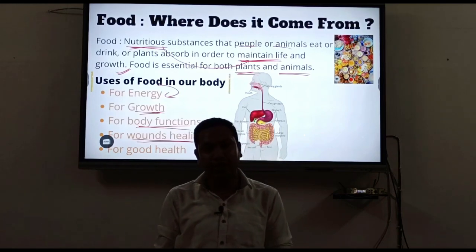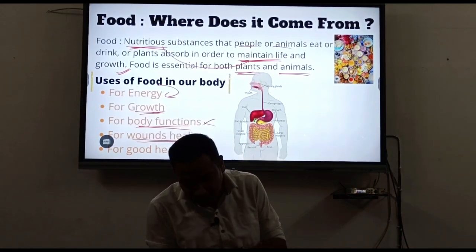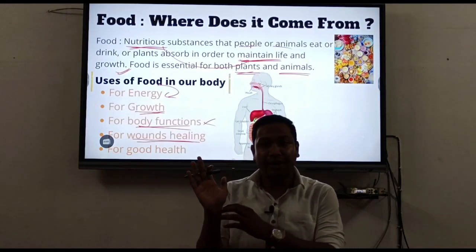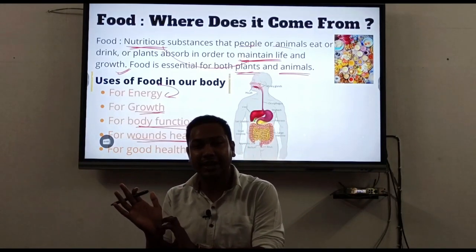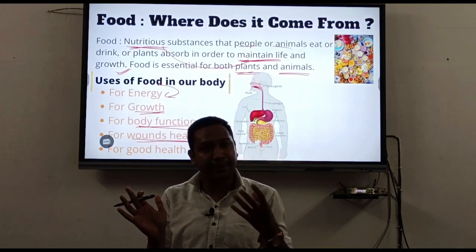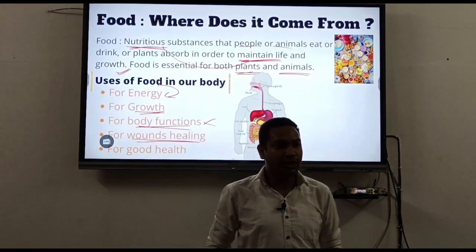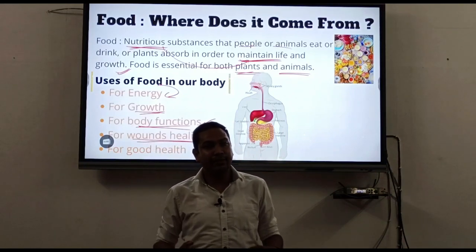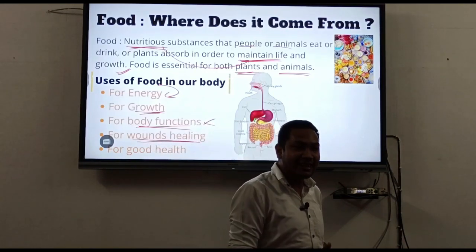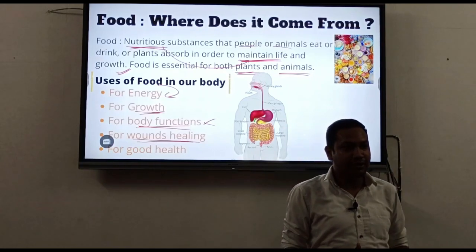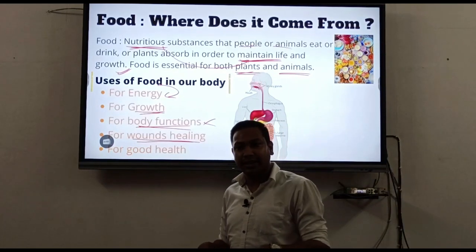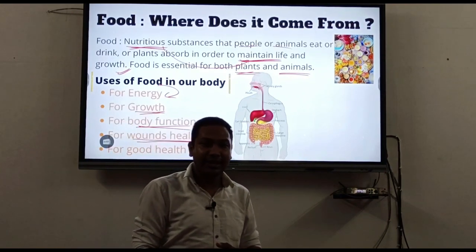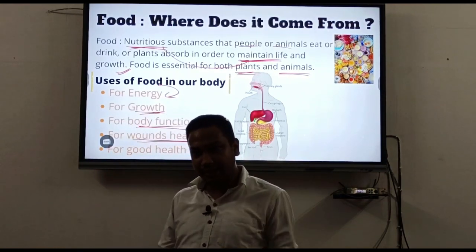Repair and healing means that when we get injured, the body heals itself internally. How quickly that healing happens depends on the food we eat. If we eat good food, recovery happens faster. If children have low energy due to poor food, they get injured more easily and healing takes longer.